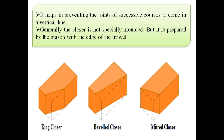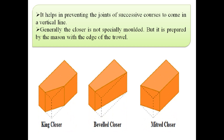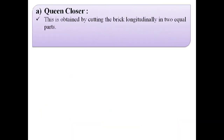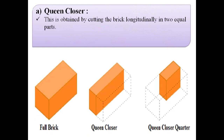Here we will discuss various types of closures: queen closure, king closure, and beveled closure in detail. The first type of closure is queen closure. Queen closure is obtained by cutting the brick longitudinally into two equal parts. In this image, the first image shows full bricks and if we cut the full brick longitudinally into two equal parts, we get a queen closure as shown in the second image.